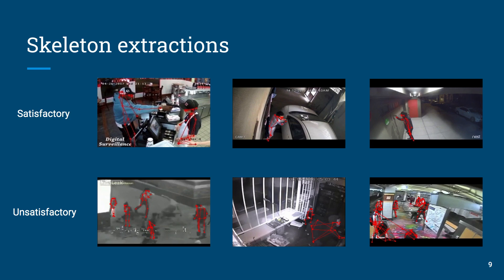These are visual examples of skeletons obtained from HR-Crime using our feature extraction pipeline. As can be seen, the skeletons are reasonably accurate for higher quality videos and where the person is clearly in the camera view. However, the feature extraction pipeline fails to detect people and their poses accurately for videos of lower quality or insufficient lighting.